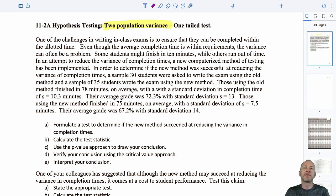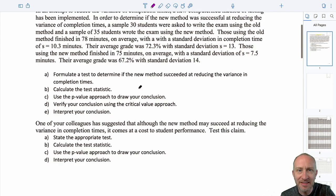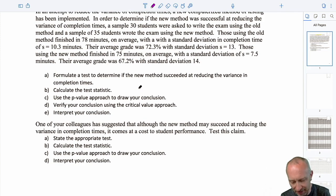Hello everybody and welcome back. So this is a familiar problem. We just worked on this exercise in the context of a test on two population variances. As we saw when we get down to the bottom here, there's a second part to this test where our colleague suggests that although the new method may succeed at reducing the variance in completion times, which is the conclusion that we came to in the first problem, they believe that this comes at a cost to student performance.